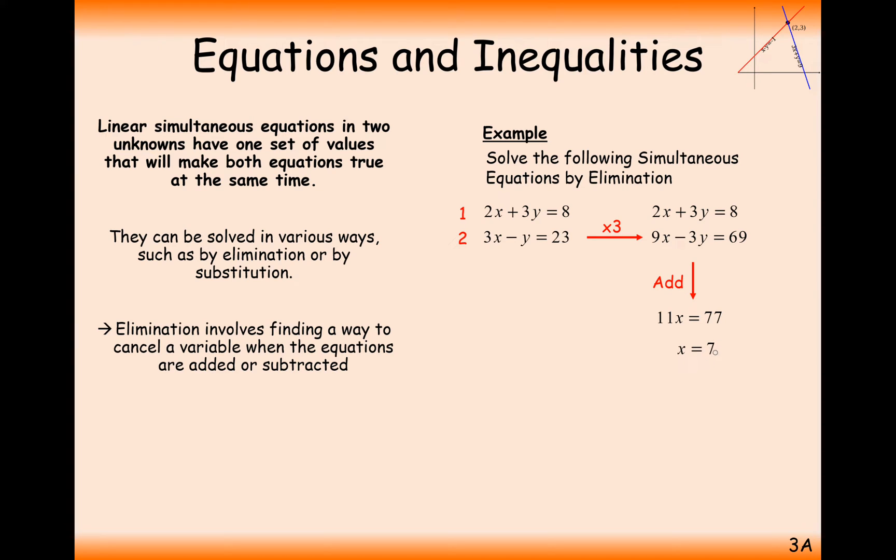We haven't quite finished the question though because we need to plug x as 7 back into one of the equations. We'll choose number 2 because that's a bit easier. So we get 21 minus y equals 23, and we get y is negative 2. The answer is x equals 7, y equals minus 2. Hopefully you're familiar with this technique, this is just a bit of revision of how you do simultaneous equations.